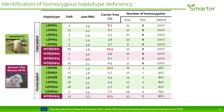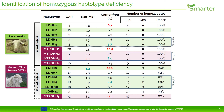The length of identified haplotypes ranges from 1.2 to 4.1 megabases, located on several chromosomes. However, in each breed, several haplotypes are located on the same chromosome. By analyzing linkage disequilibrium between haplotypes on the same chromosome, we identified that several haplotypes could be grouped due to their strong linkage disequilibrium. As a result, we identified the segregation of 12 putative recessive lethal mutations: 8 in Lacaune and 4 in Manech Tête Rousse.